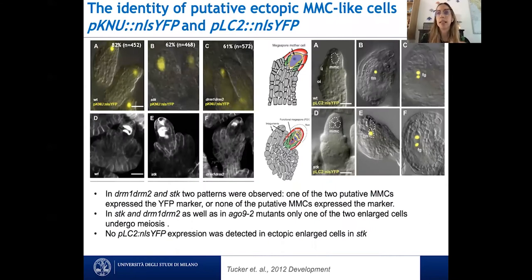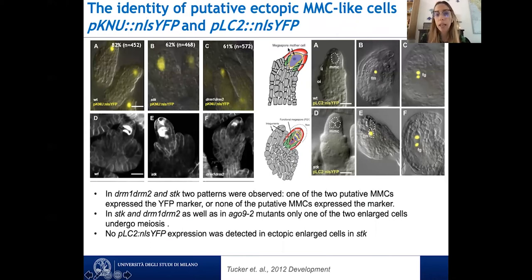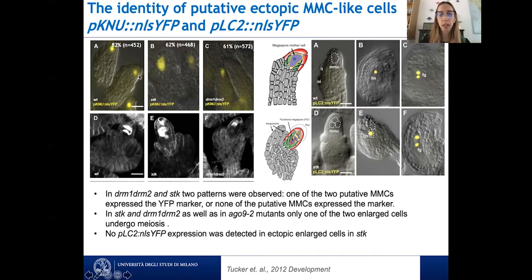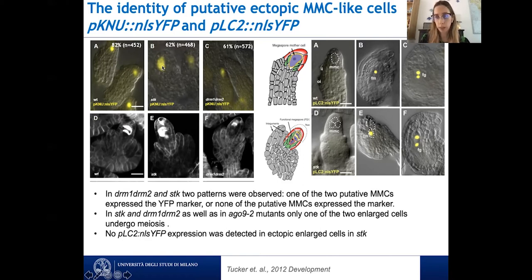We had these mutants presenting extra enlarged MMC-like cells and wanted to understand the identity of these cells. We used two different markers: a marker for MMC identity — Knuckles-GFP — and for functional megaspore identity — the promoter of LC2-GFP. The Knuckles marker has very precise expression in the MMC once it is differentiated. When we crossed this marker into the mutants, only one of the two enlarged cells was expressing the marker.